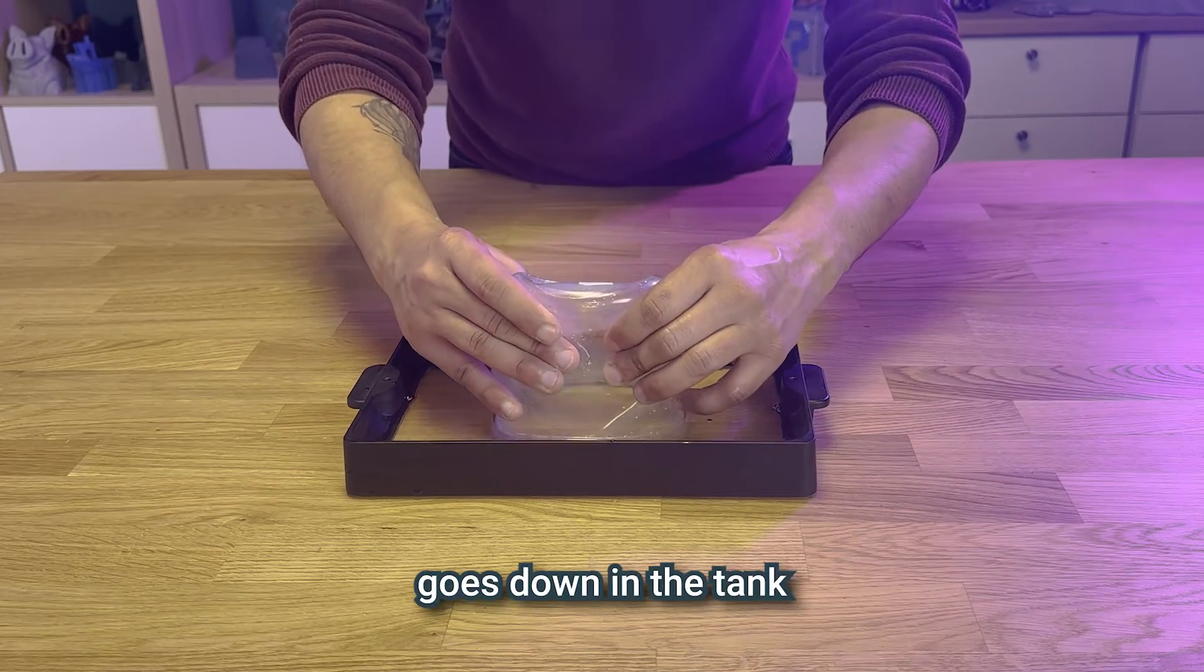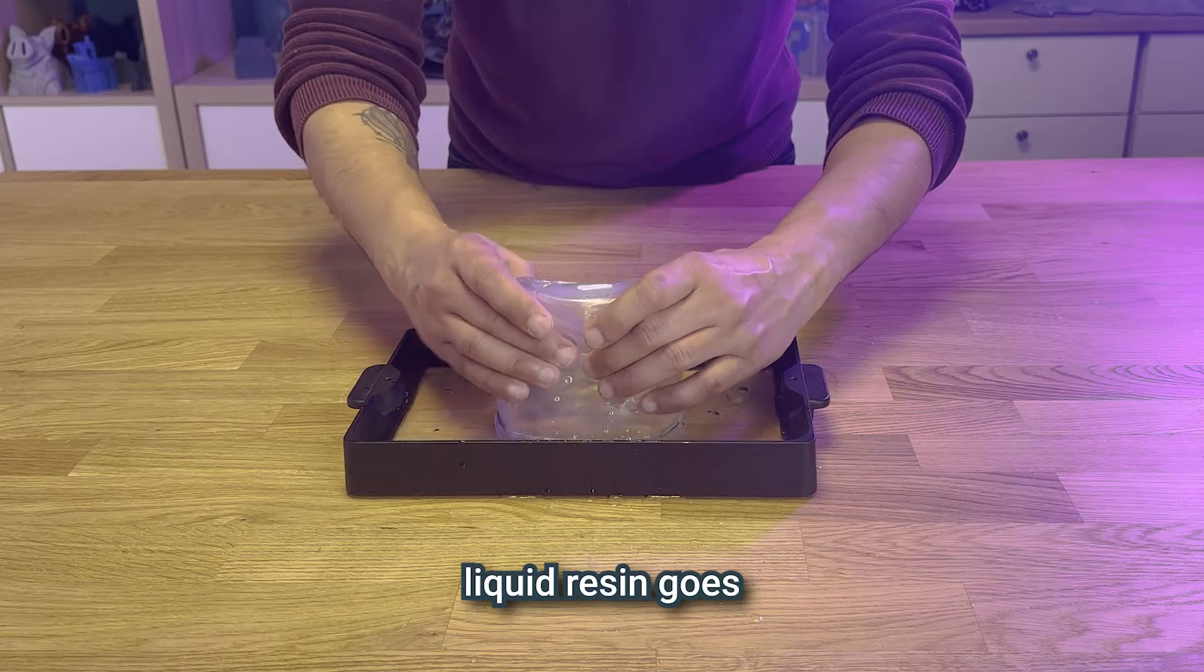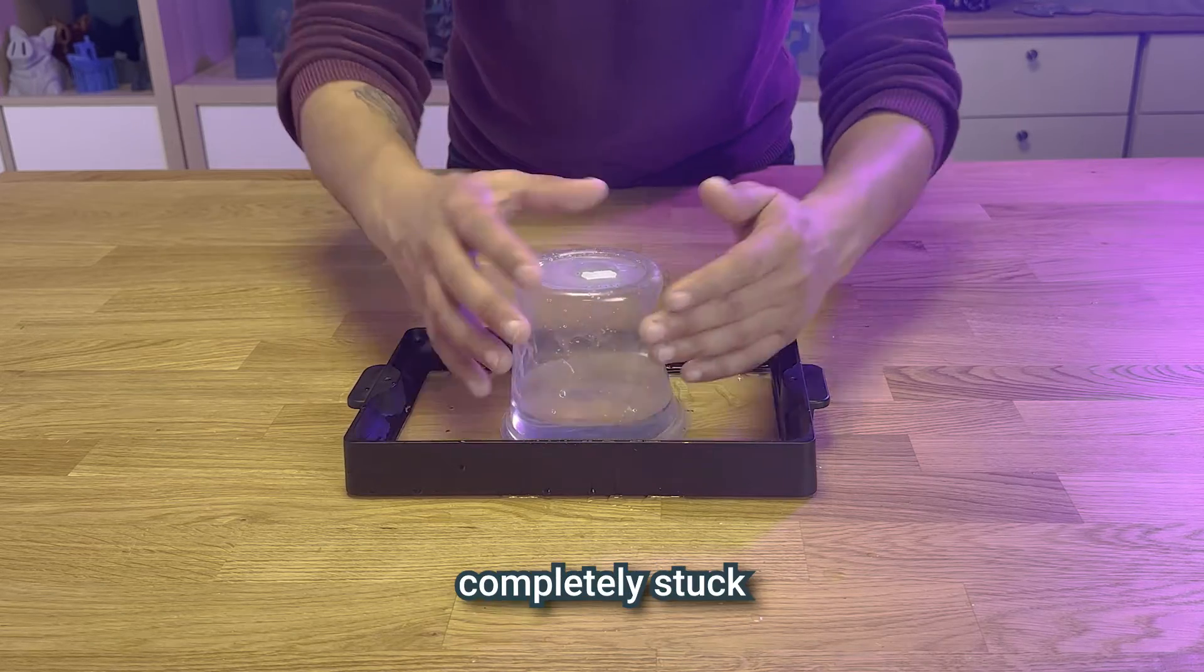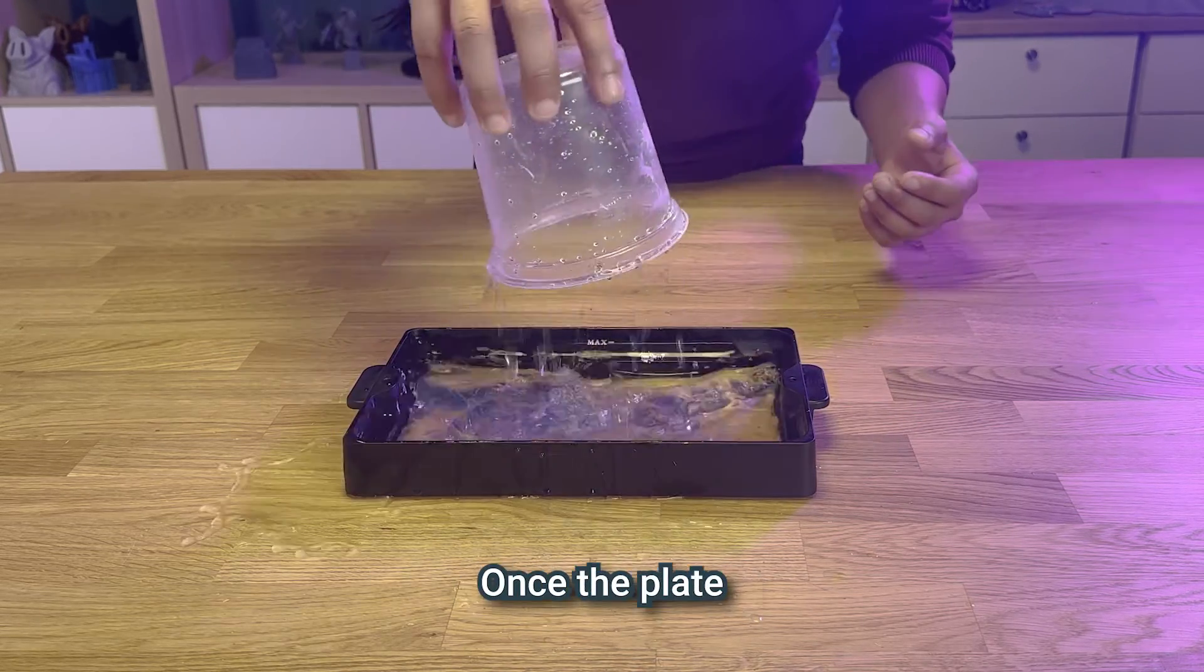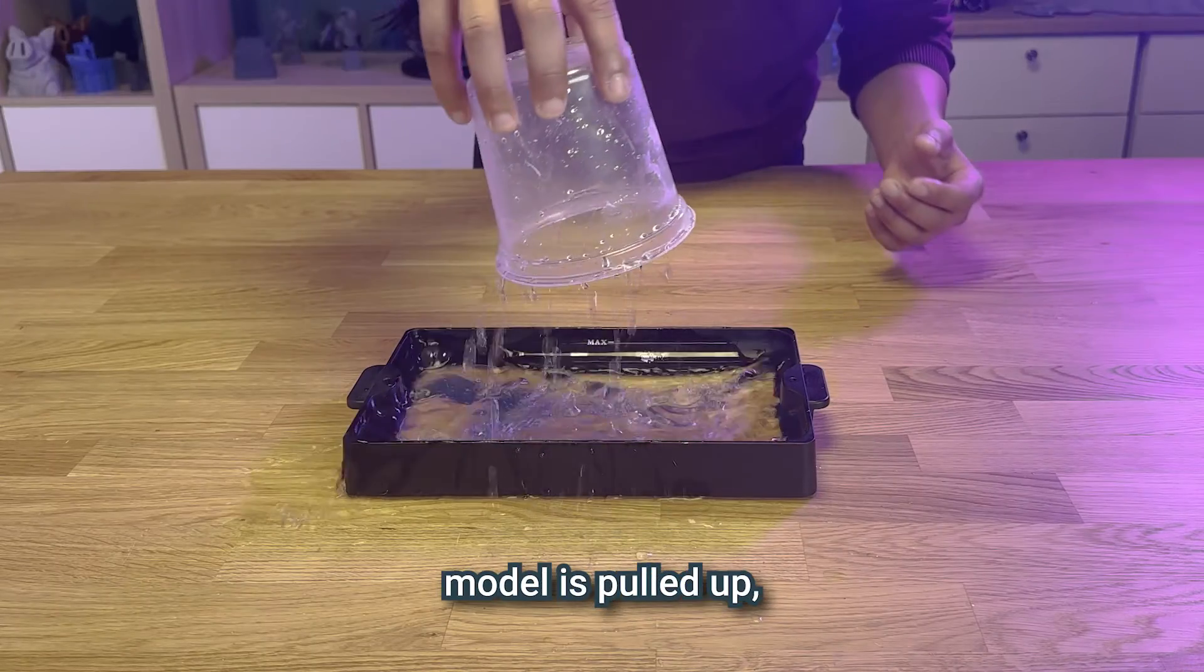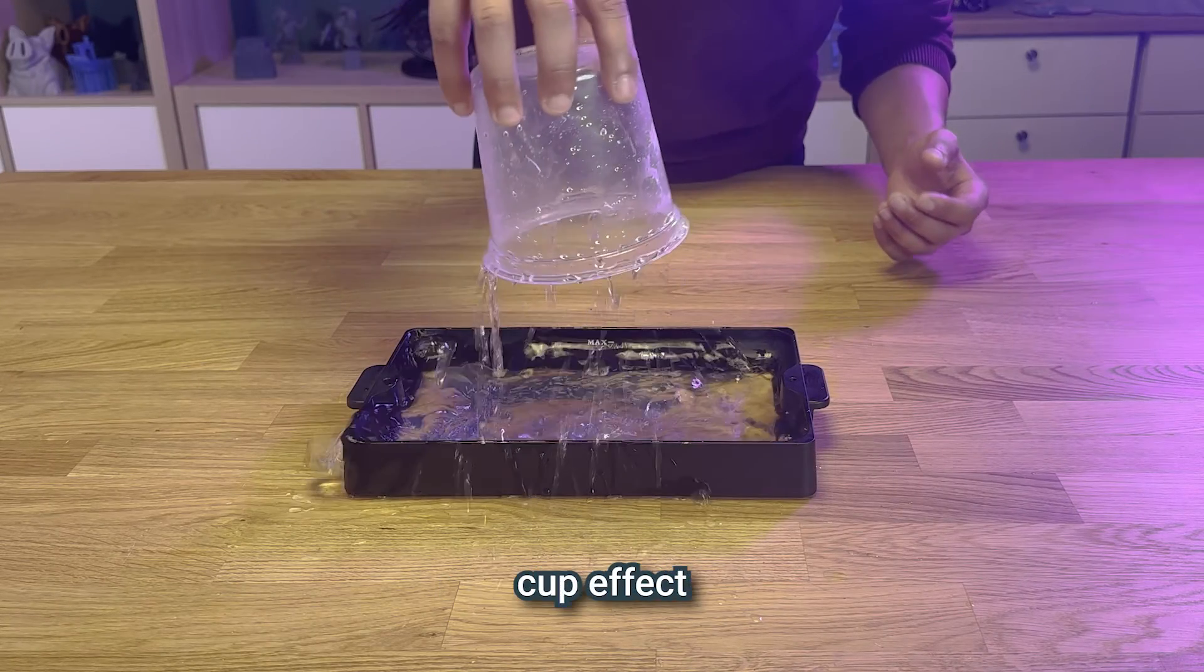When the hollowed 3D model goes down in the tank and against the screen, liquid resin goes in it and stays completely stuck with no air able to come out. Once the plate goes up, the 3D model is pulled up, creating a tension and a suction cap effect.